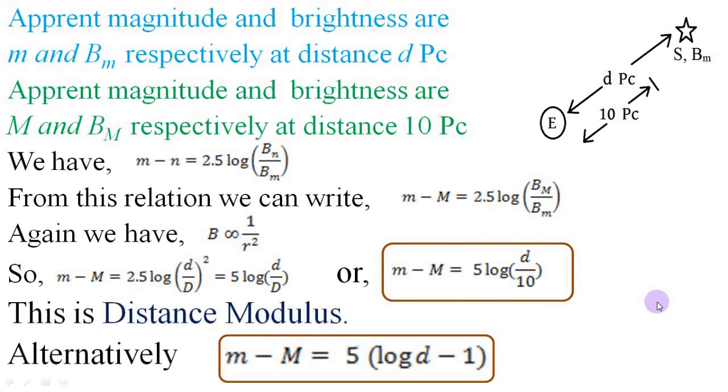It is a measure of distance and is called distance modulus. If we calculate apparent brightness or magnitude and find the distance of the star in astronomical units, then we can find the absolute magnitude of the star by using this equation. Alternatively, distance modulus can be written as this equation also.